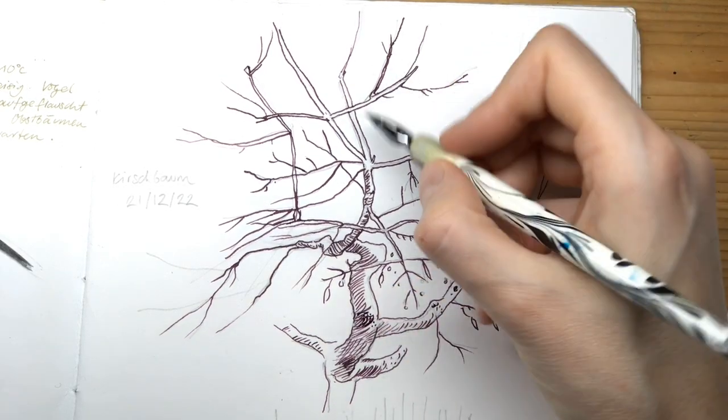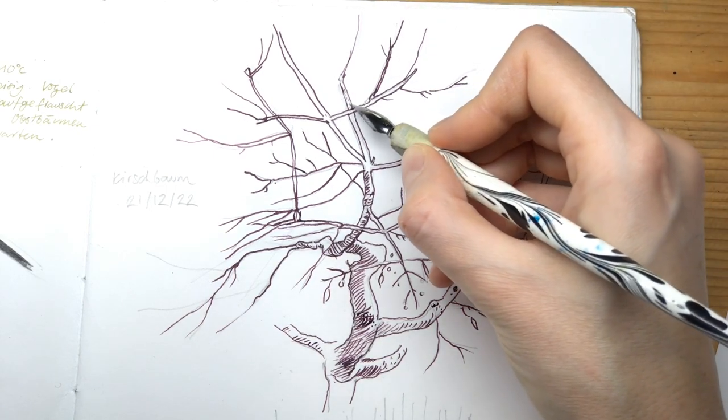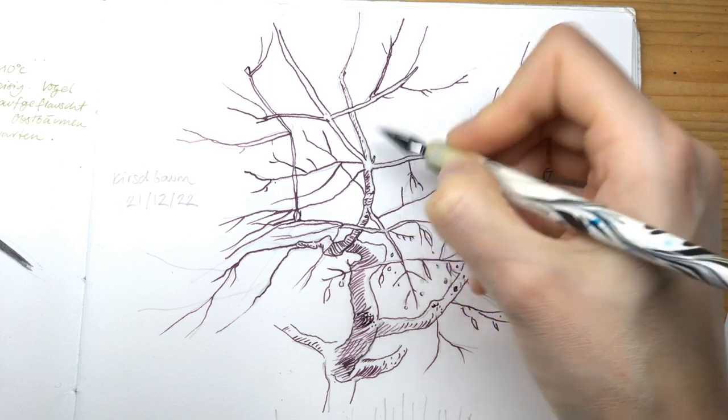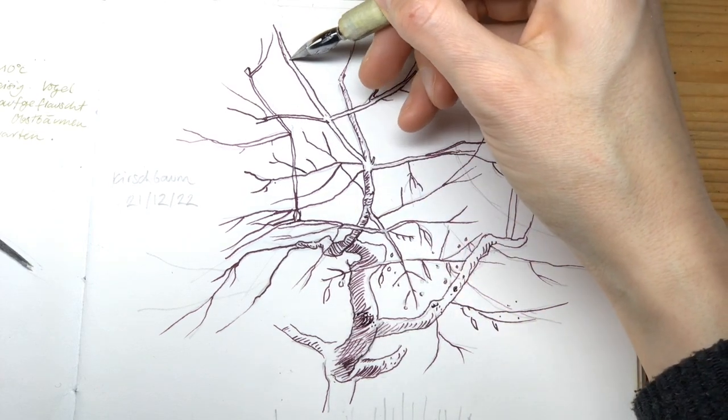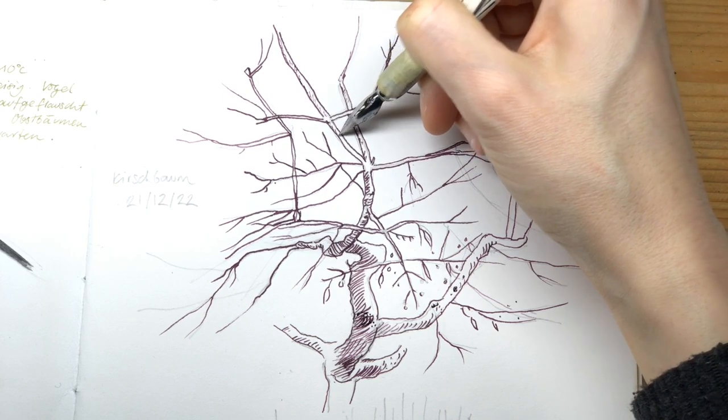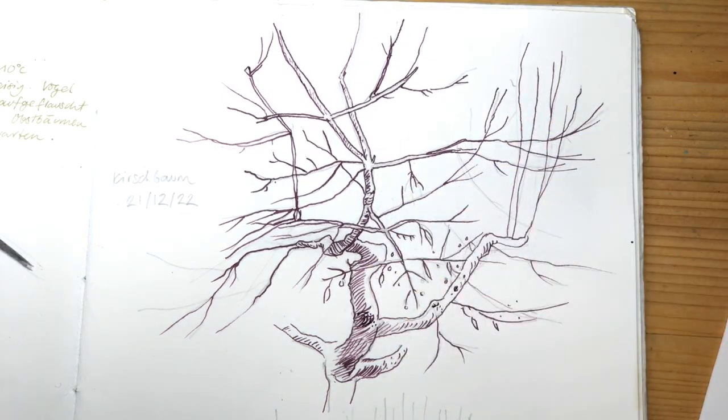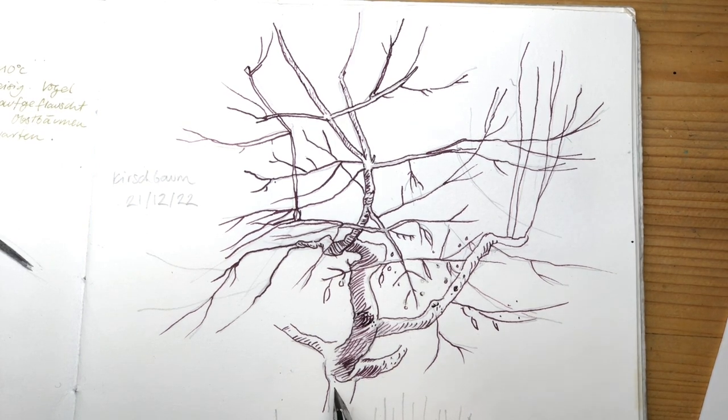This process often looks something like this: You start to practice, then you take a step back and analyze what you need to spend more time with or what you want to get better at. And then you pursue it and practice some more. And then after a while you take another look at your art and see what needs more work, and then you start practicing that.